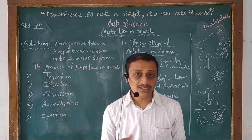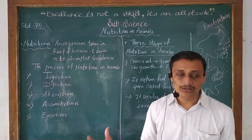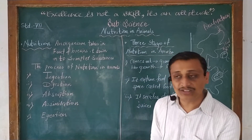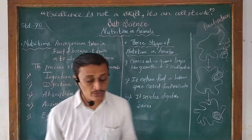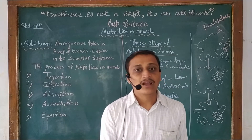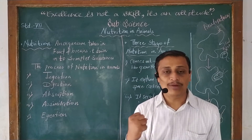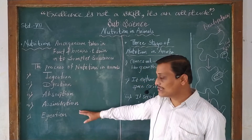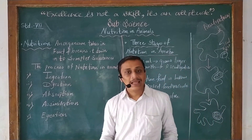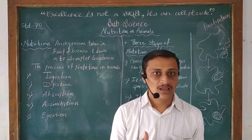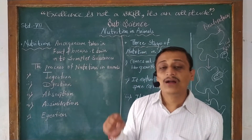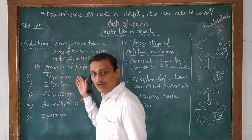Those big pieces of food which were taken through the mouth are broken down into simpler form in the digestion process. The next process is absorption. In the absorption process, nutrients are absorbed from the food that has been consumed and broken down. The soluble products of digestion are absorbed by various organs in the body. In assimilation, the absorbed substances are utilized by the body. The last process is egestion — undigested food which is not broken down properly is given out of the body.